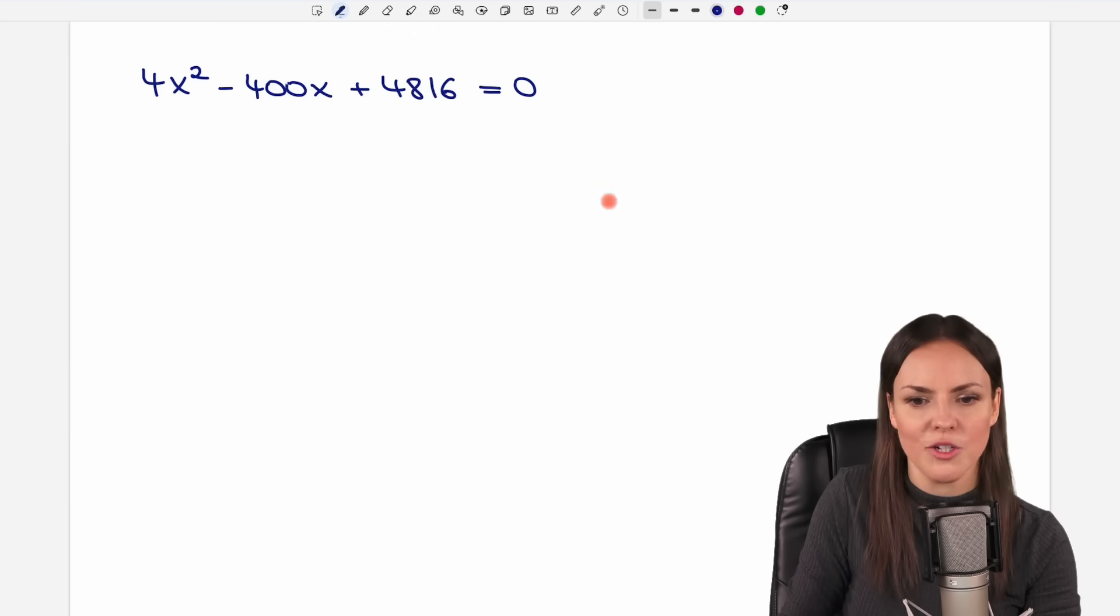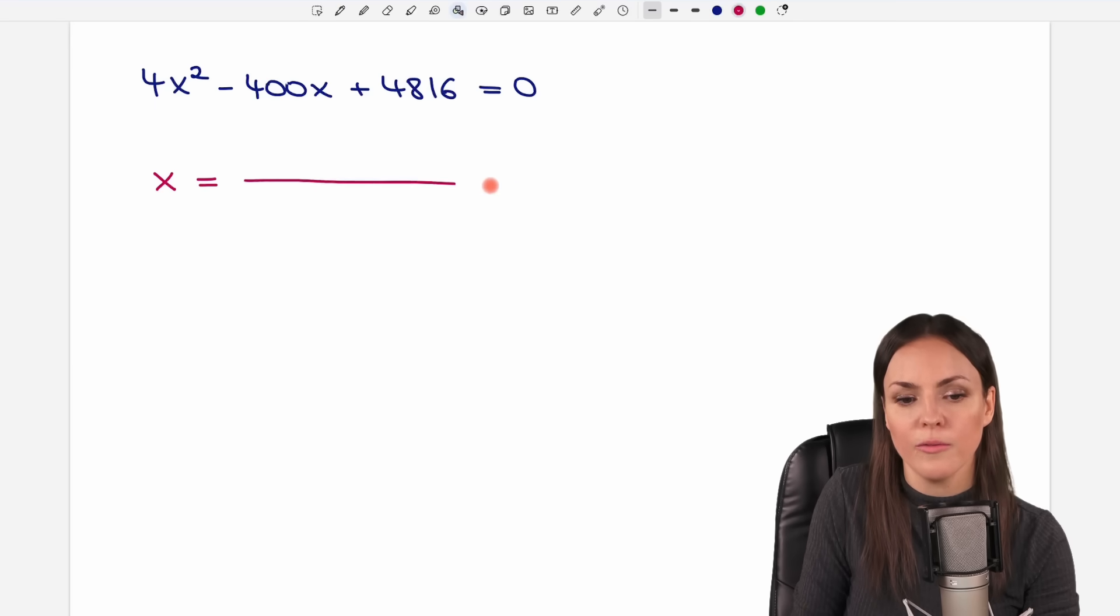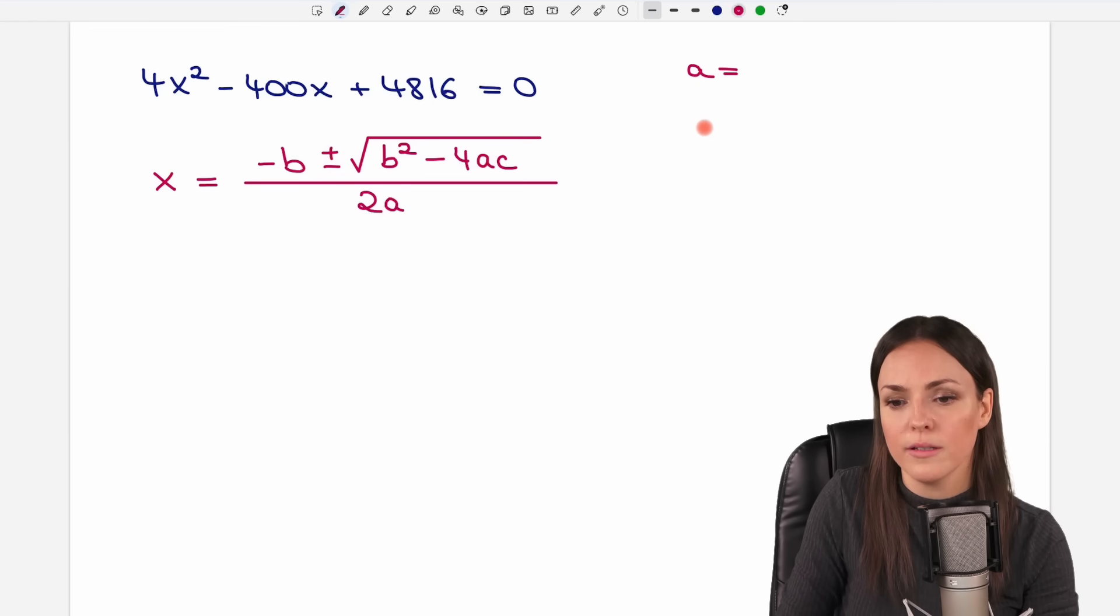So let's take our equation here and let's write down the quadratic formula first again. We find solutions for our x by doing the following. Minus b plus minus the square root of b squared minus 4ac divided by 2a. What is my a? What is my b? And what is my c?